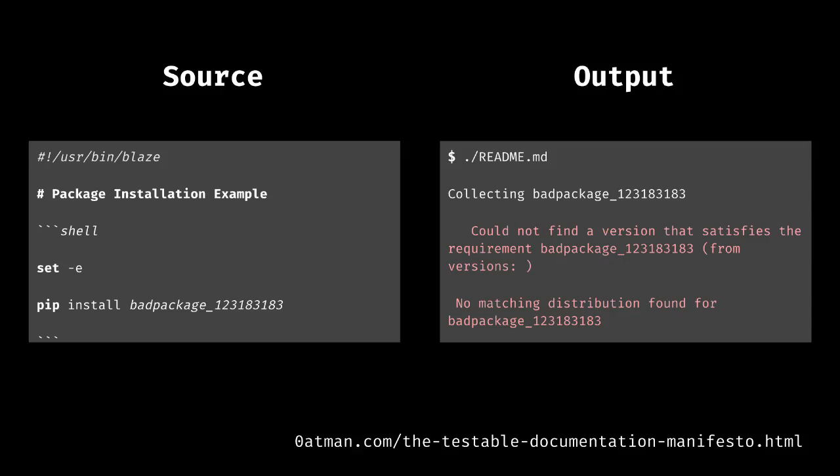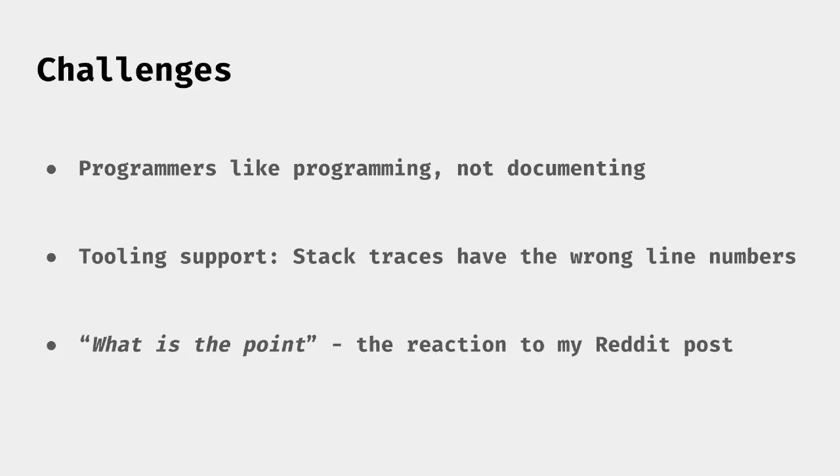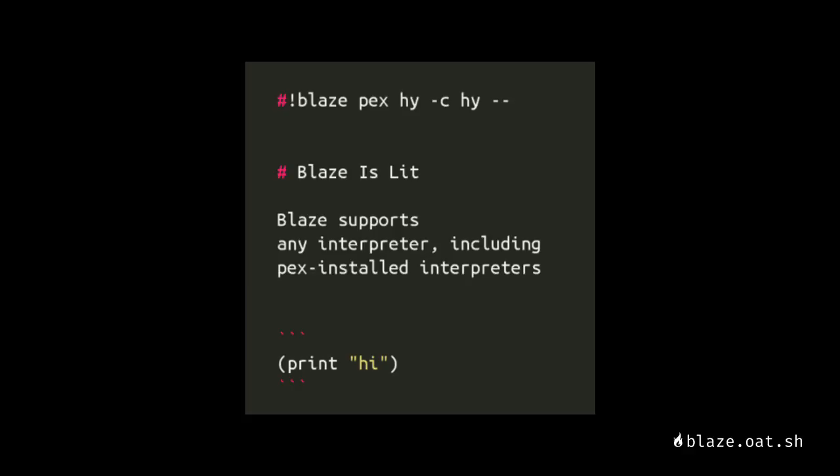Back to our documentation problem. I realized that I already have this tool that can be used to make our documentation verifiable. A testable doc looks exactly like the documentation we've been writing all along. In fact, this file only has one small change — it's got the Blaze shebang at the top of the file, making it executable. So what have I learned through this? There are challenges, and they are as ever human, not technical. If you want to make your documentation testable, you can do so today with almost no changes to your code base. Blaze even supports Lisp.